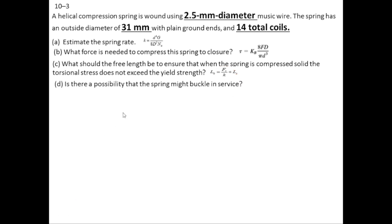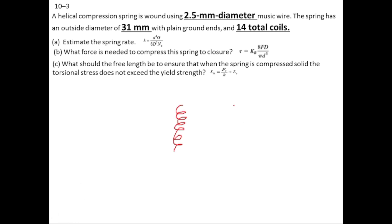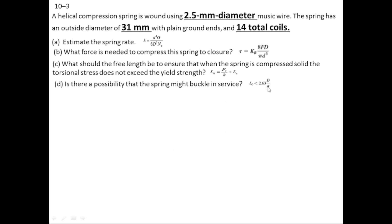In the next part we determine whether the spring will buckle. We will cover buckling in detail in a later lecture, but basically buckling depends on the ratio of diameter to length. If the spring is very long with a small diameter, it will buckle. If the length is less than the critical length, it will not buckle. A spring with a smaller diameter has more chance of buckling. The spring will not buckle if L0 is less than 2.63 × D / alpha.